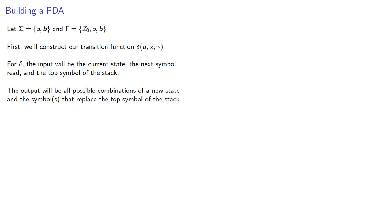The output, since we're dealing with a non-deterministic automaton, will be all possible combinations of the new state and symbols that replace the top symbol of the stack. We'll represent this move as an ordered pair (q', gamma'), where q' is the new state and gamma' is the new top symbol or symbols.